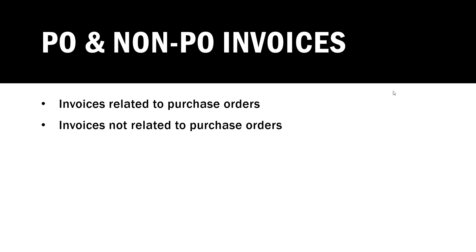In an organization there will be instances where a supplier's invoice is related to a purchase order, and other instances where invoices are not related to purchase orders. If an invoice is related to a purchase order, you go to the purchase order to process the purchase invoice. If an invoice is not related to a purchase order, you still need to enter that transaction, but you do it through something called invoice journals.